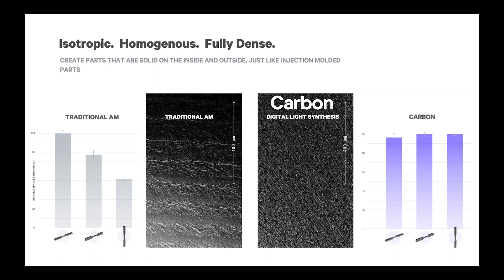In this way, DLS parts are actually grown, producing parts that are isotropic, homogeneous, and fully densified, just like injection molded production parts. In fact, the uniformity of DLS printed parts can be many times better than complex-shaped injection molding parts due to the inherent molding artifacts.